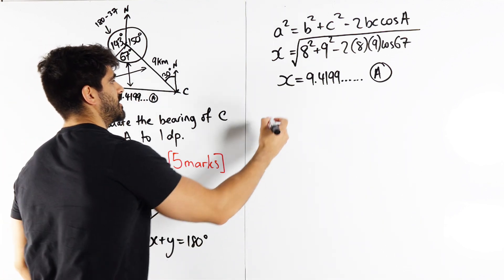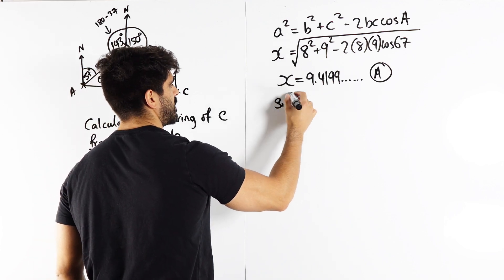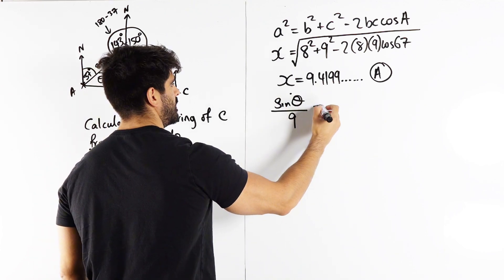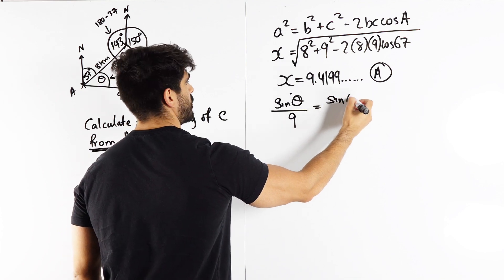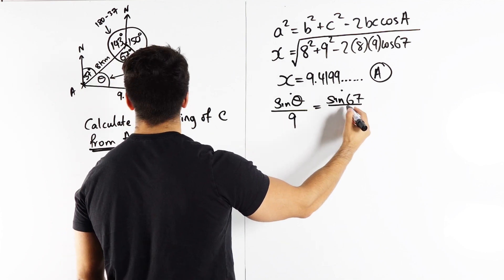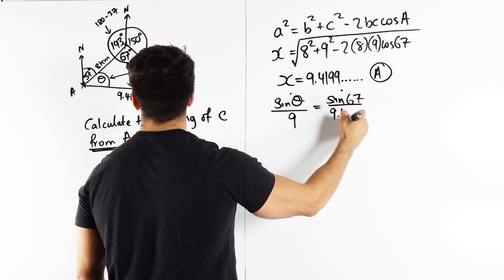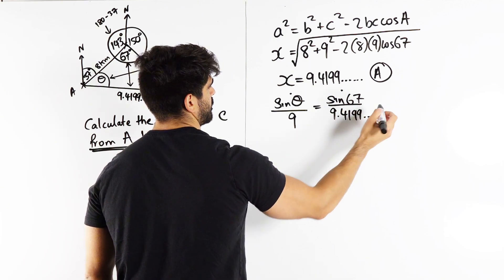Okay, so let's say sine of theta over the opposite, 9, is sine of 67 divided by the opposite, 9.4199. Okay?